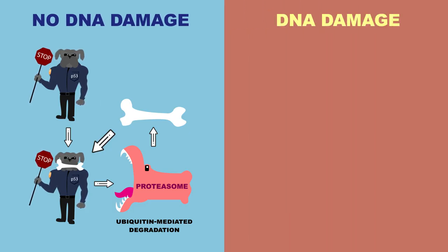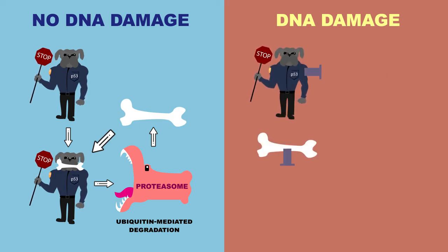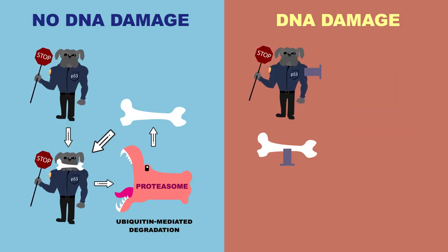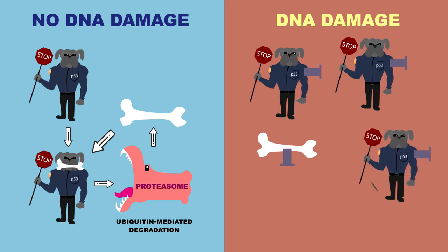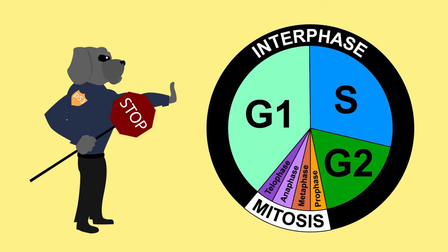However, when DNA damage occurs, P53 and MDM2 get phosphorylated, and MDM2 does not bind to it. As a result, P53 sticks around and its concentrations build up, causing cell cycle arrest. Typically, it will halt progression of the cell cycle at the G1 stage.